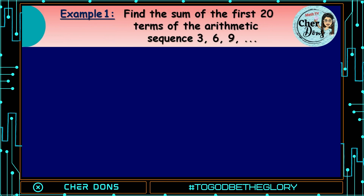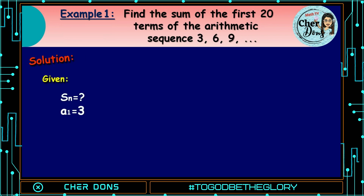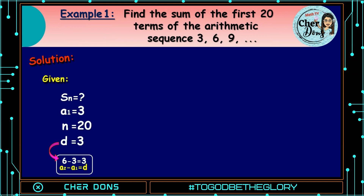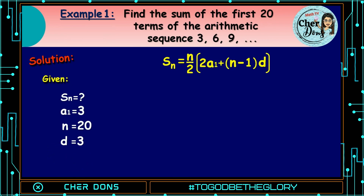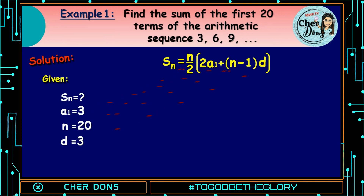Example number 1: Find the sum of the first 20 terms of the arithmetic sequence 3, 6, 9, and so on. Given: S of n is unknown, a sub 1 is 3, n is 20, d is 3. Applying the formula: S of n is equal to n over 2 multiplied by (2 times a sub 1 plus quantity n minus 1 multiplied by d). We use this formula because the nth term is not given. Where 3 goes to a sub 1, 20 goes to n, and 3 goes to d.